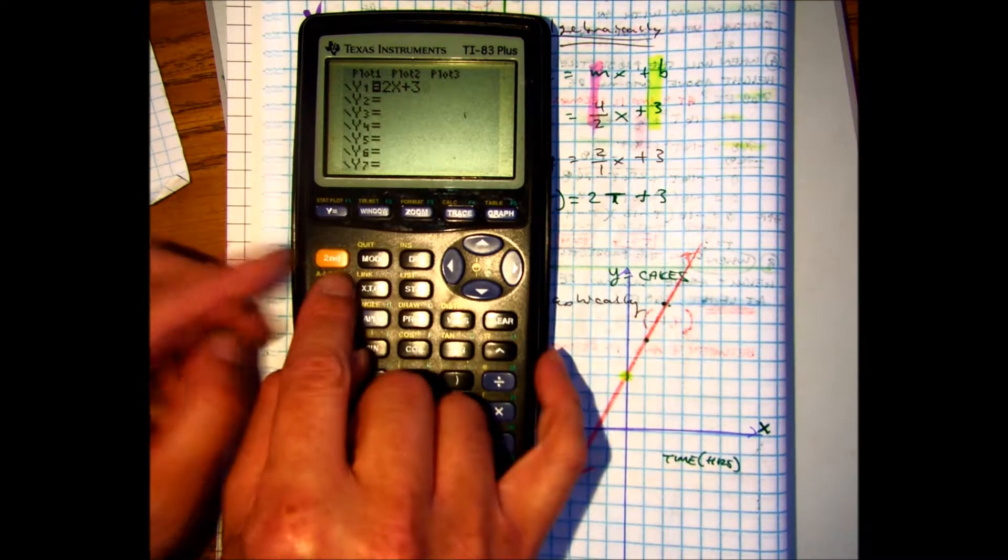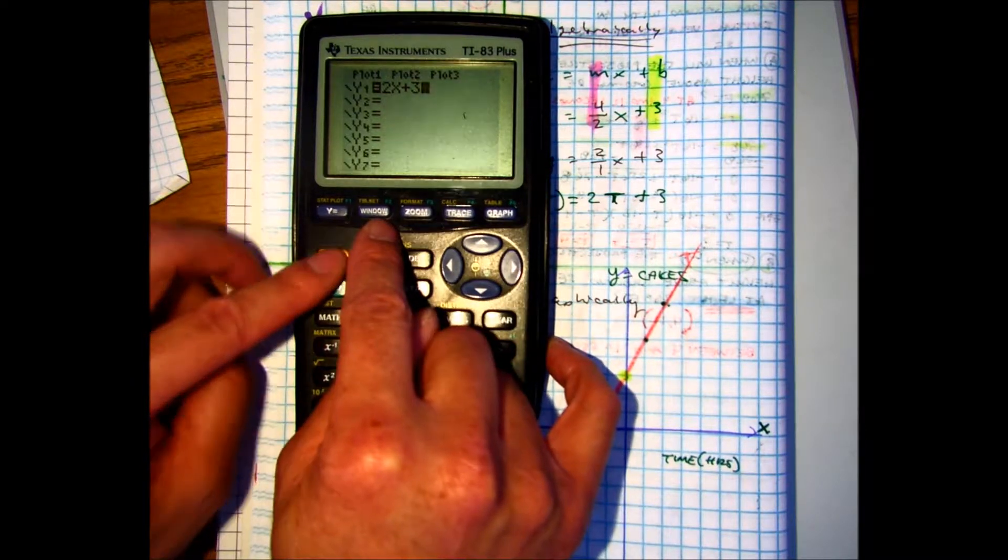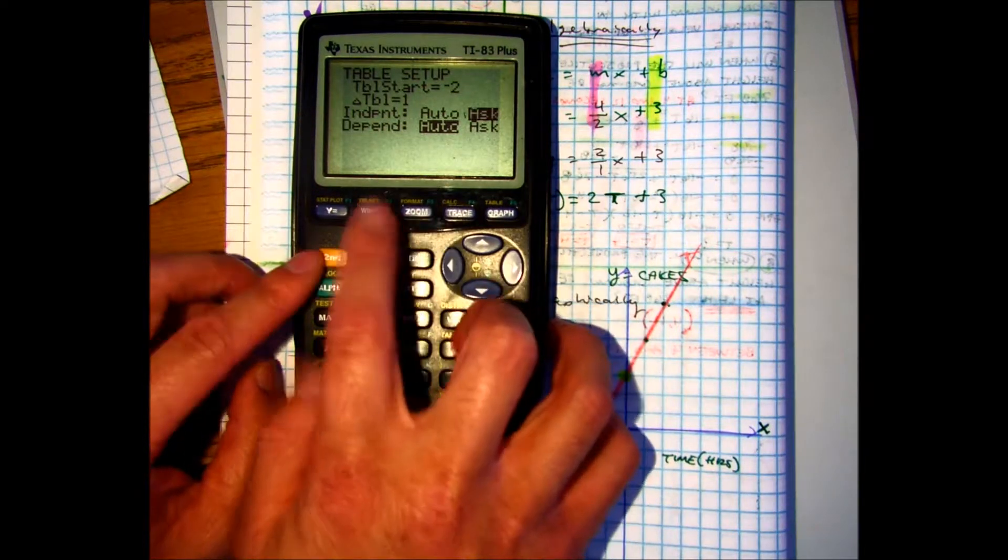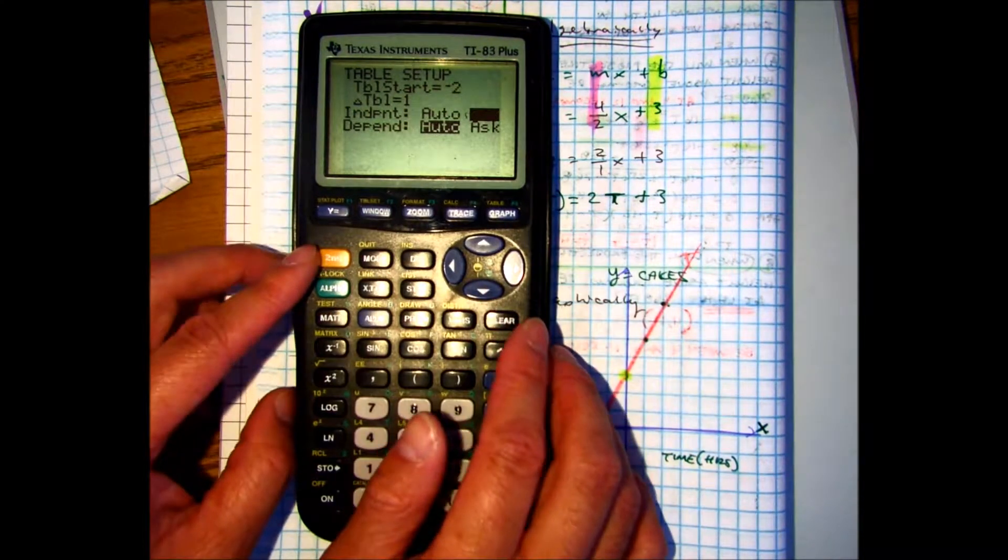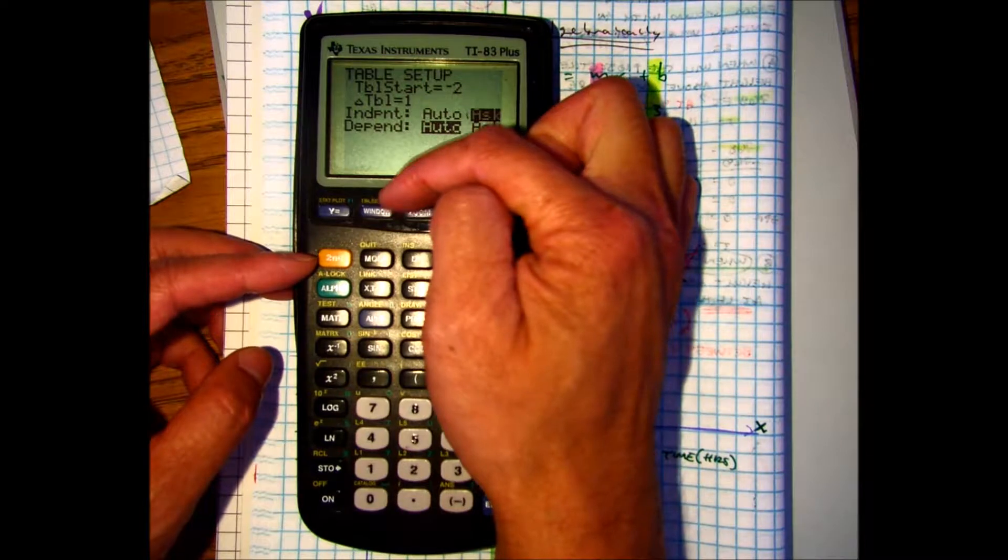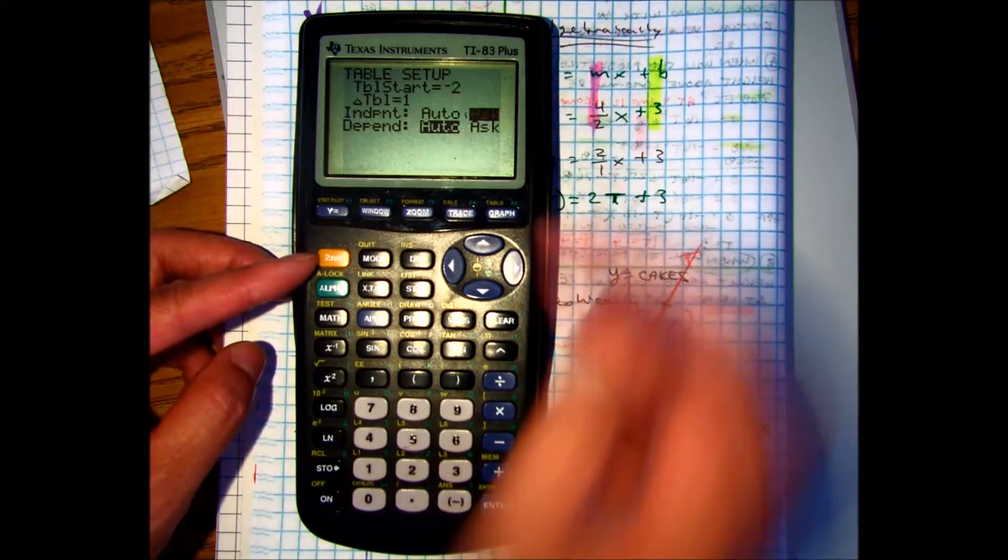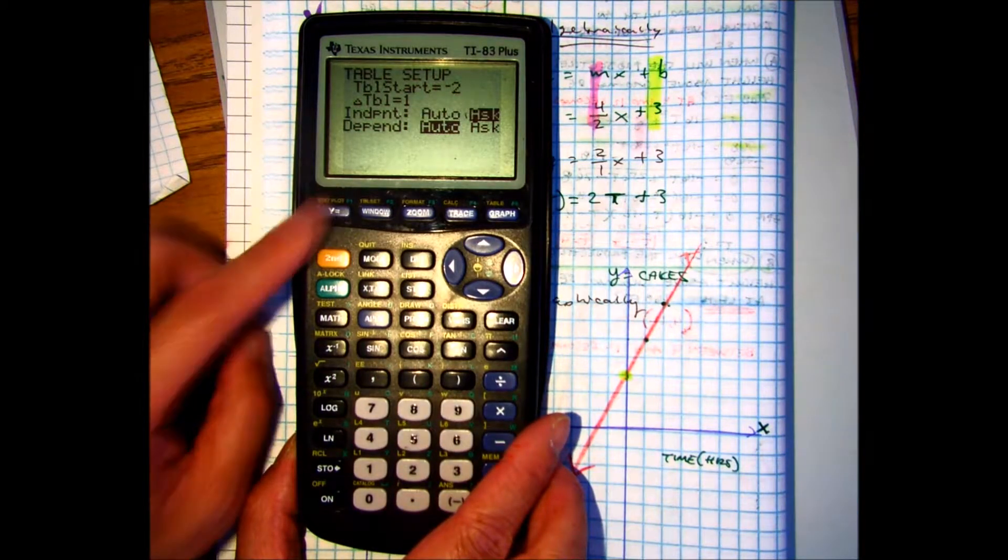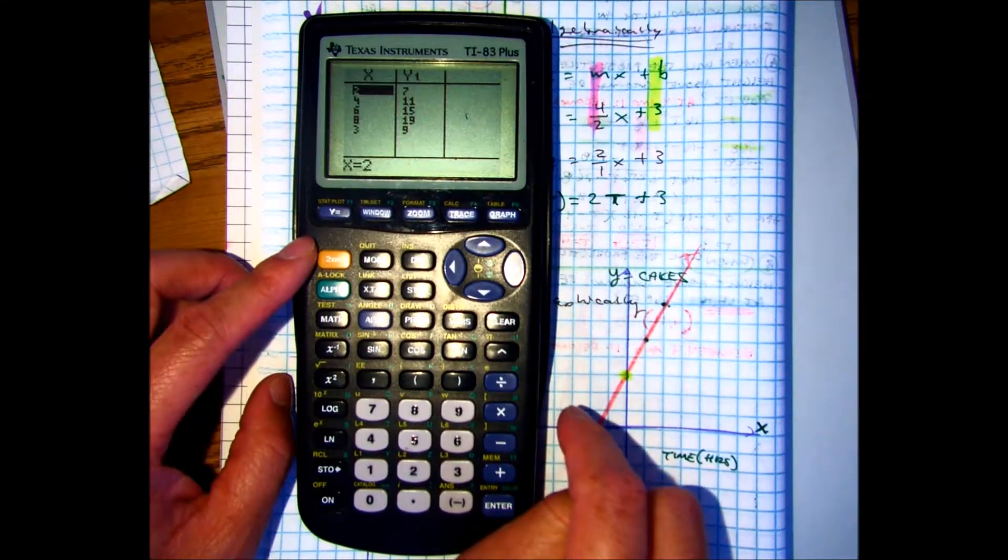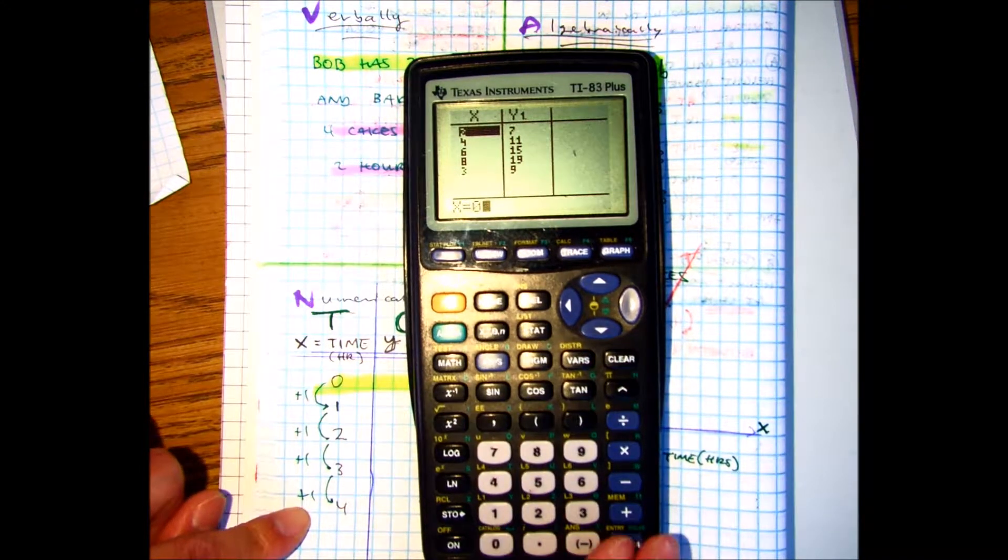Once it's in my calculator, you can change the table set, so that'll be second window. Make sure on your table set, under second window, it has ask and auto. We've done this before. So that's under second window. And then you go to your table, second graph. And then I can just plug in all of our numbers for the x-axis. Zero, enter, one.